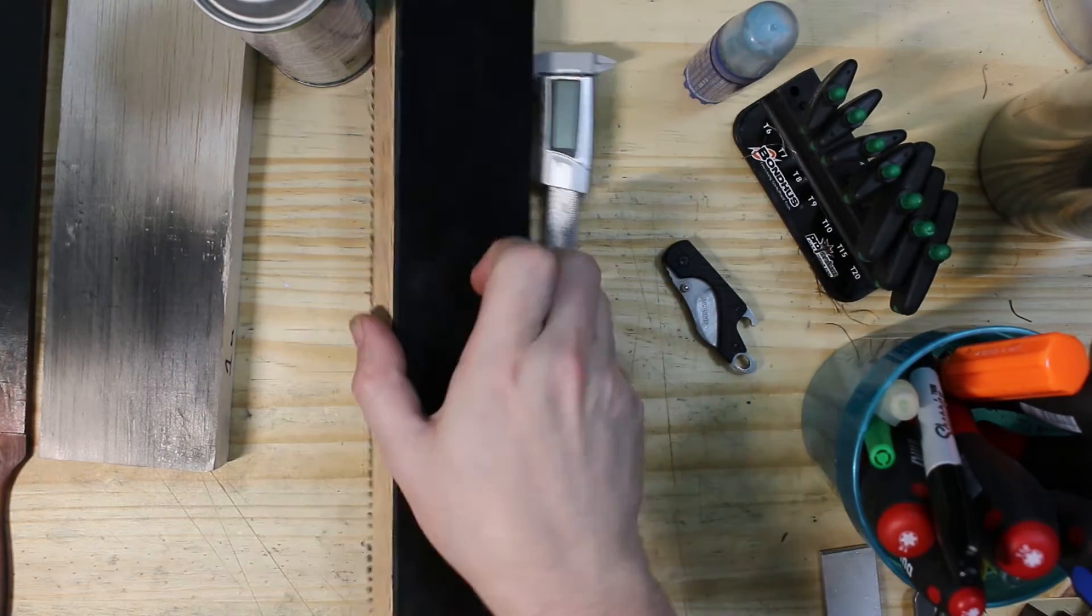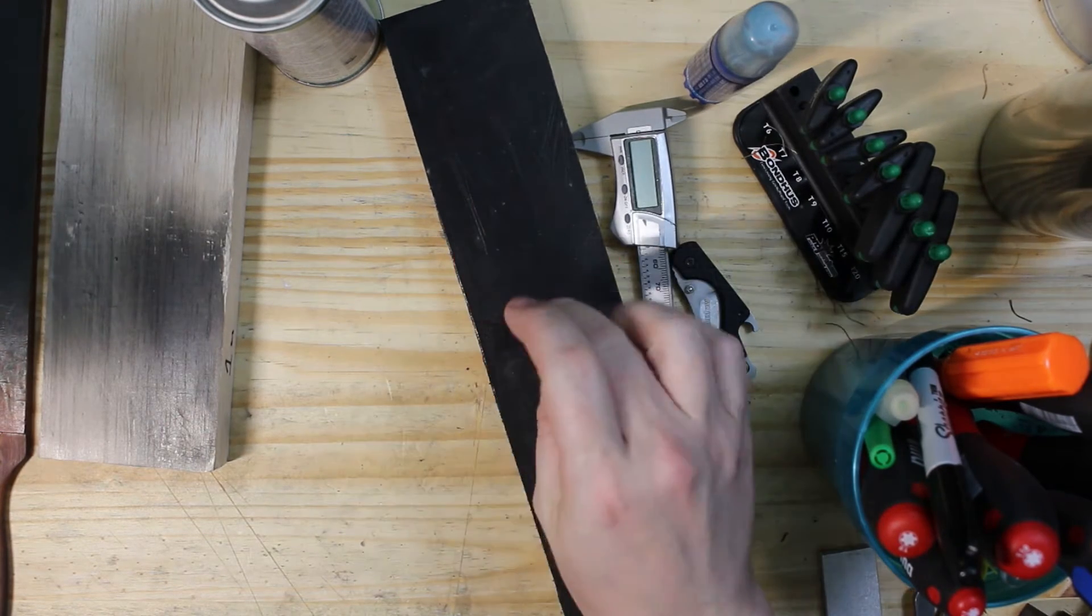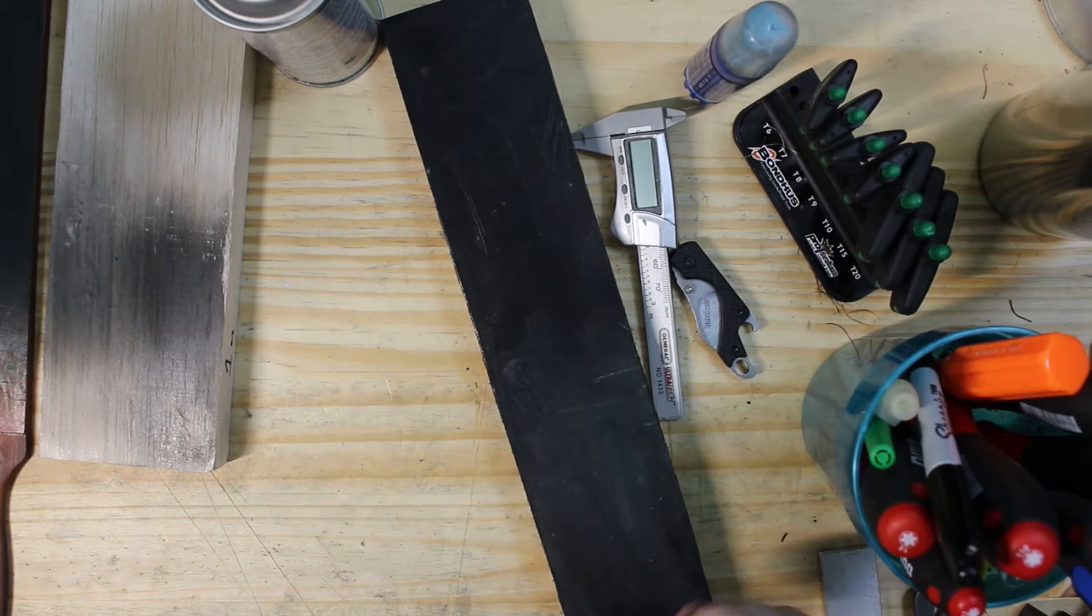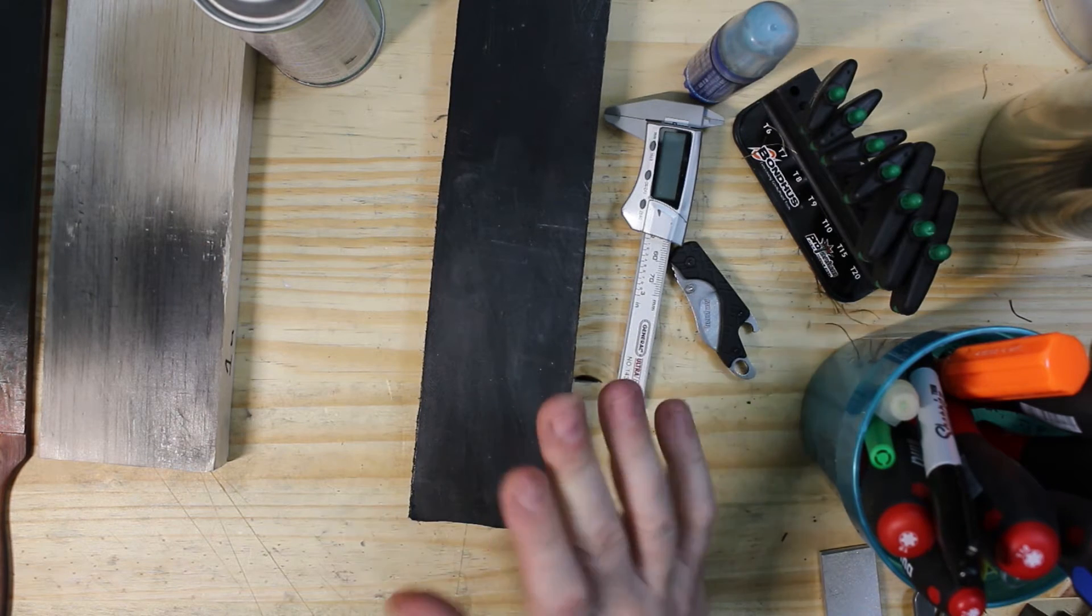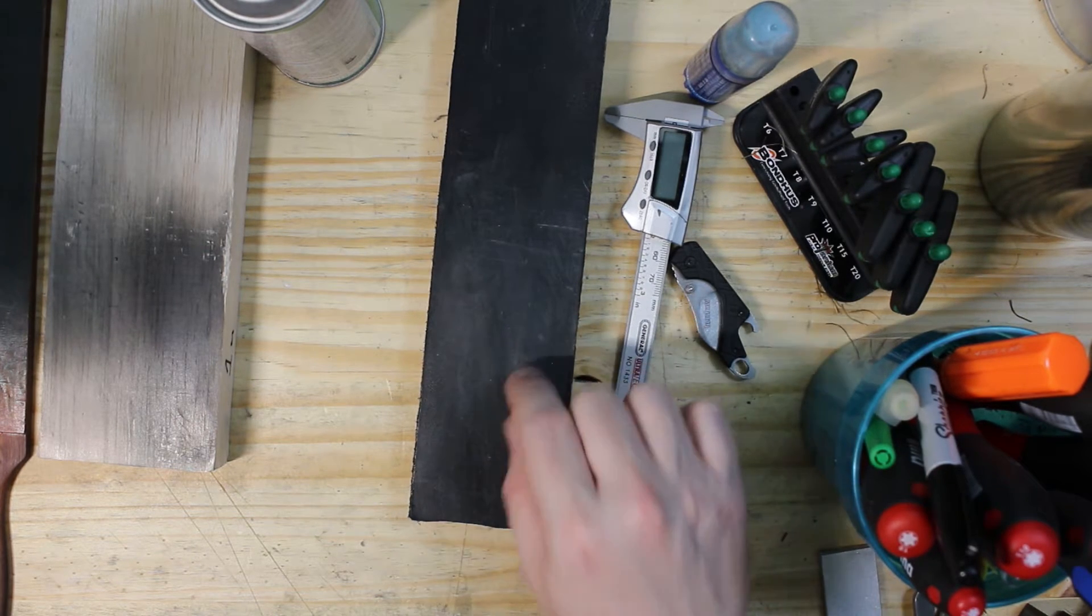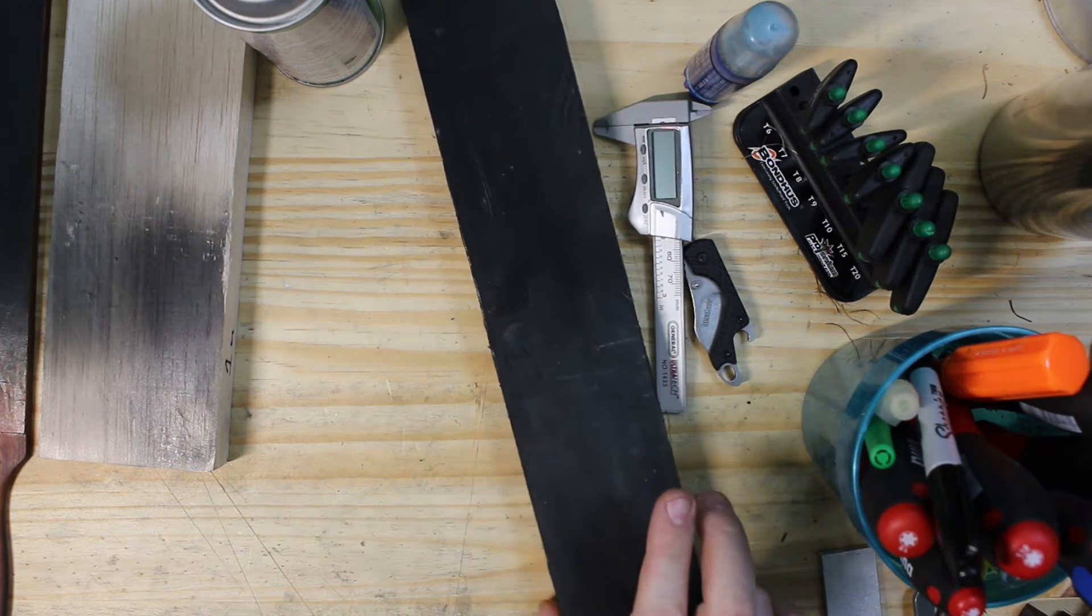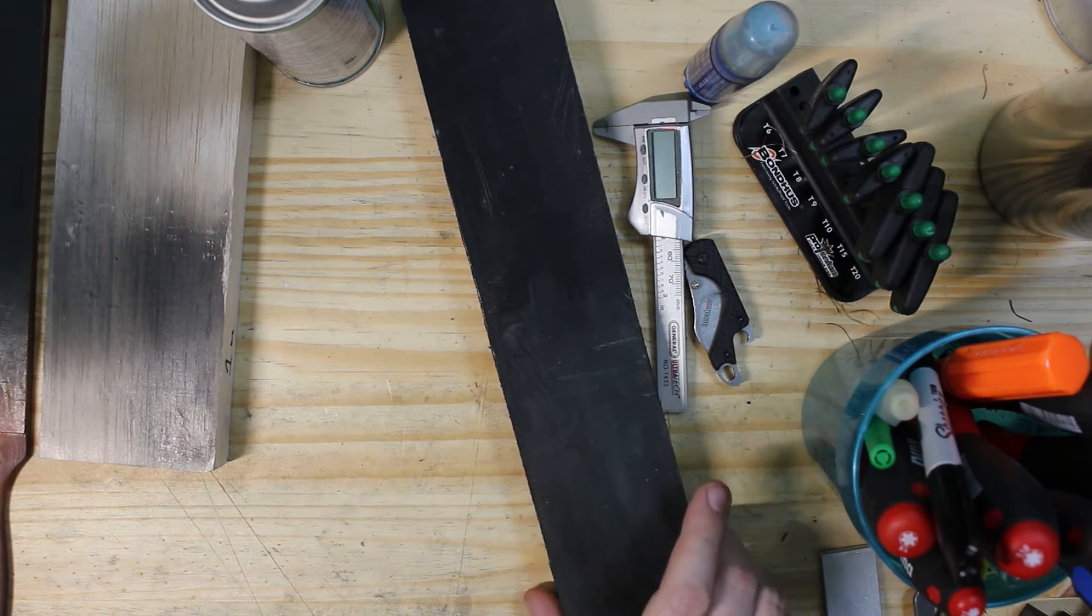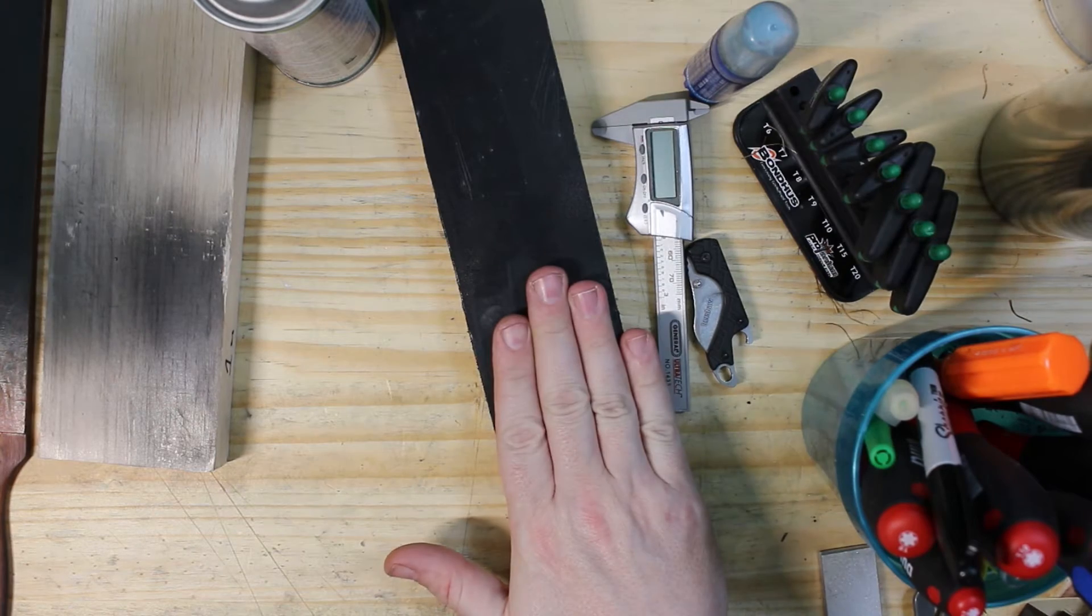Then starts the fun stuff. This is the strop that we made, and I'll link the video. It has 4 micron diamond emulsion from KME. That 4 micron diamond emulsion, when it's put on pretty thick, cuts pretty well and helps you finish off from that 1500 grit stone.